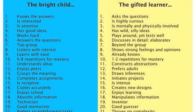Number ten: a bright child has to hear something six to eight times in order to master it, while a gifted child needs only one or two times to gain mastery. This creates frustration for gifted learners — if you've got it after two times and have to hear it another four to six more times, that can be really mind-numbing. In most cases, the gifted learner is getting it quicker than a high-achieving kid who is not gifted.